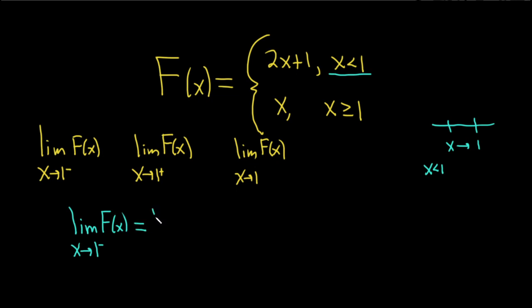So this is equal to the limit as x approaches 1 from the left. Now we simply replace F of x with the top piece, 2x plus 1. To evaluate this limit, the rule is generally, if you can plug in the number and get an answer, it's okay to do. If you don't get an answer, try something else. Here we can just plug in 1. So we drop the limit sign. This is 2 times 1 plus 1, which is 2 plus 1, which equals 3.